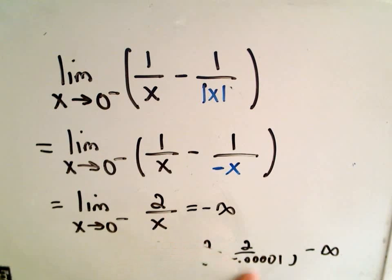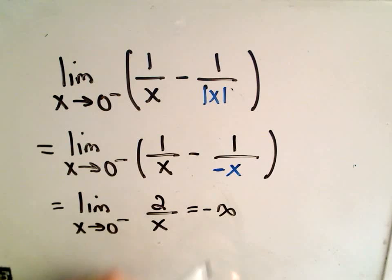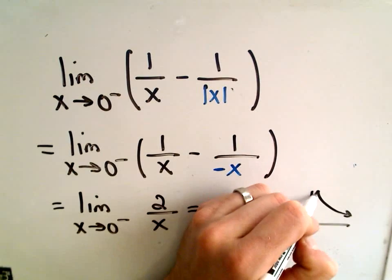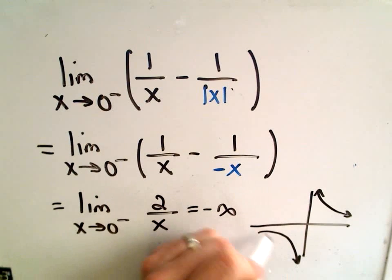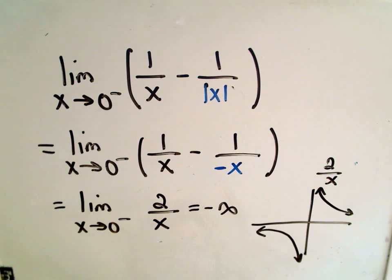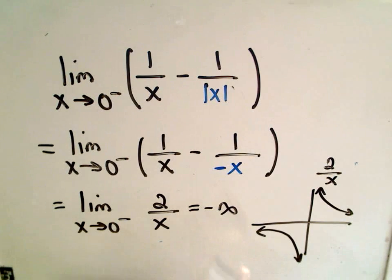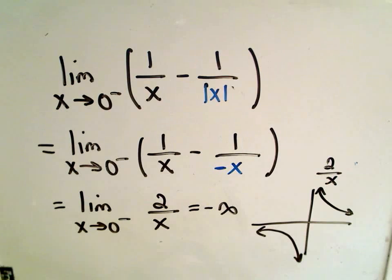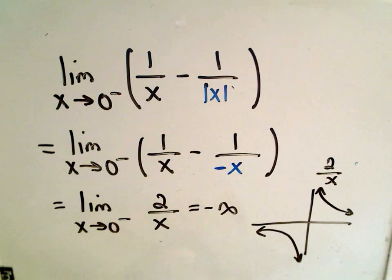Likewise, if you know the graph of 1 over x, then 2 over x looks basically the same — just a vertical stretch. As you approach the x-coordinate of 0 from the left, the y-values go towards negative infinity. I hope these absolute value limit problems make sense. Feel free to post comments, or if you'd like to see more complicated ones, let me know. Thank you.